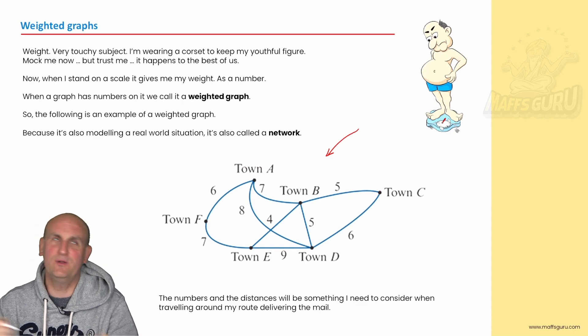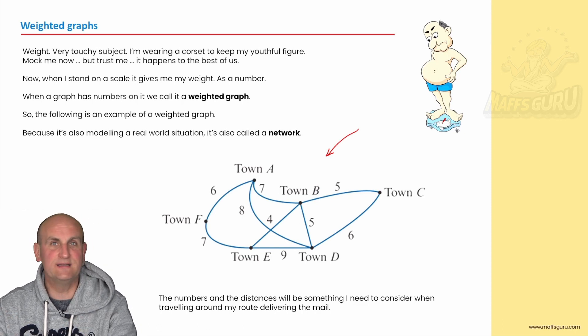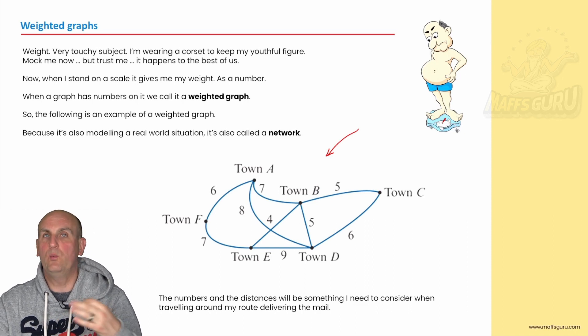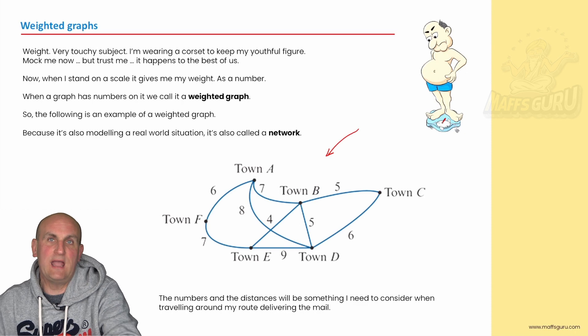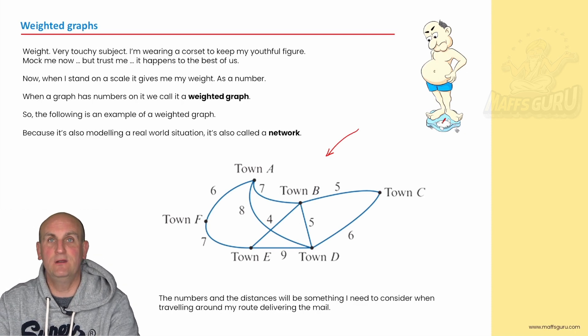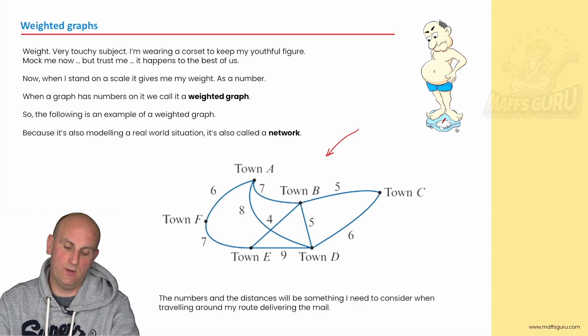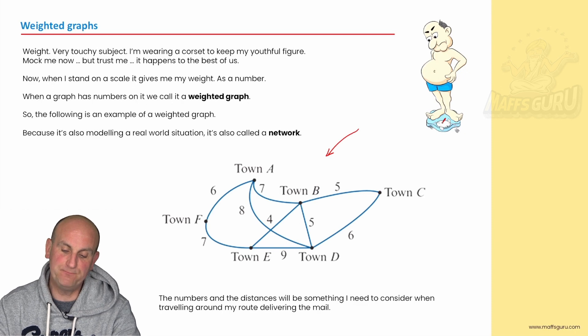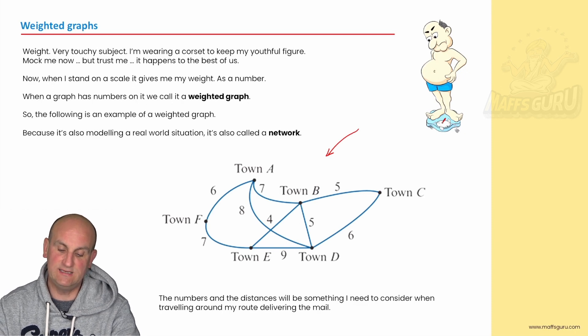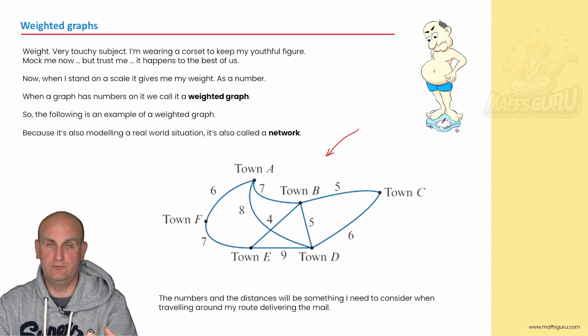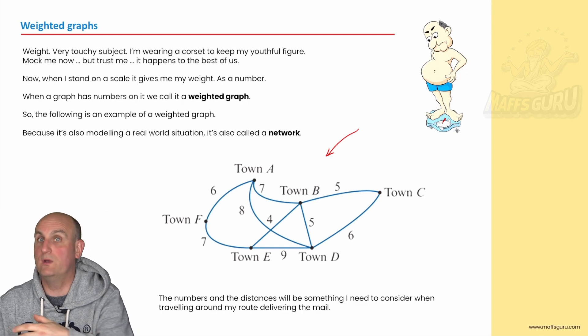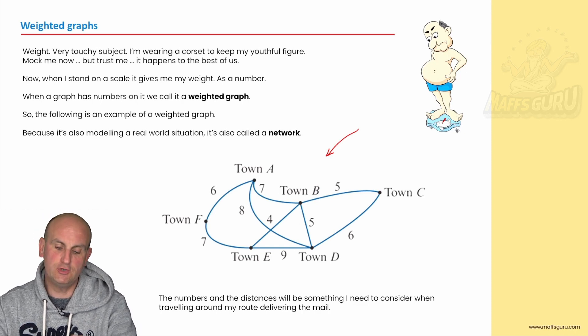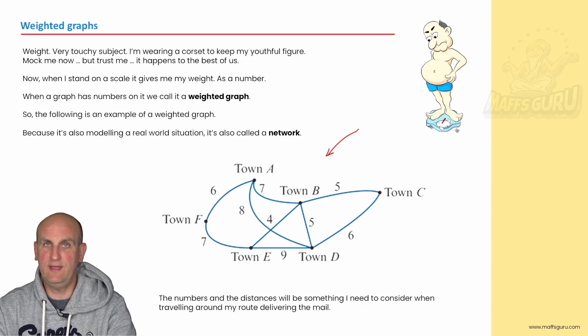Well again, it's maths. We don't want to call it a weighted graph. Can we think of something better? Oh yeah, we call this a network. So because a weighted graph is modeling a real life situation, we're actually going to use the word network. So let's have a look at the diagram again. And what we now see is I've got town A, B, C, D, E, and F. So this could be my postal route I'm looking to go. I want to go A, B, C, D, E, and F. I want to go through all of them or maybe want to go through none of them. What would the shortest path be to get around all of that?